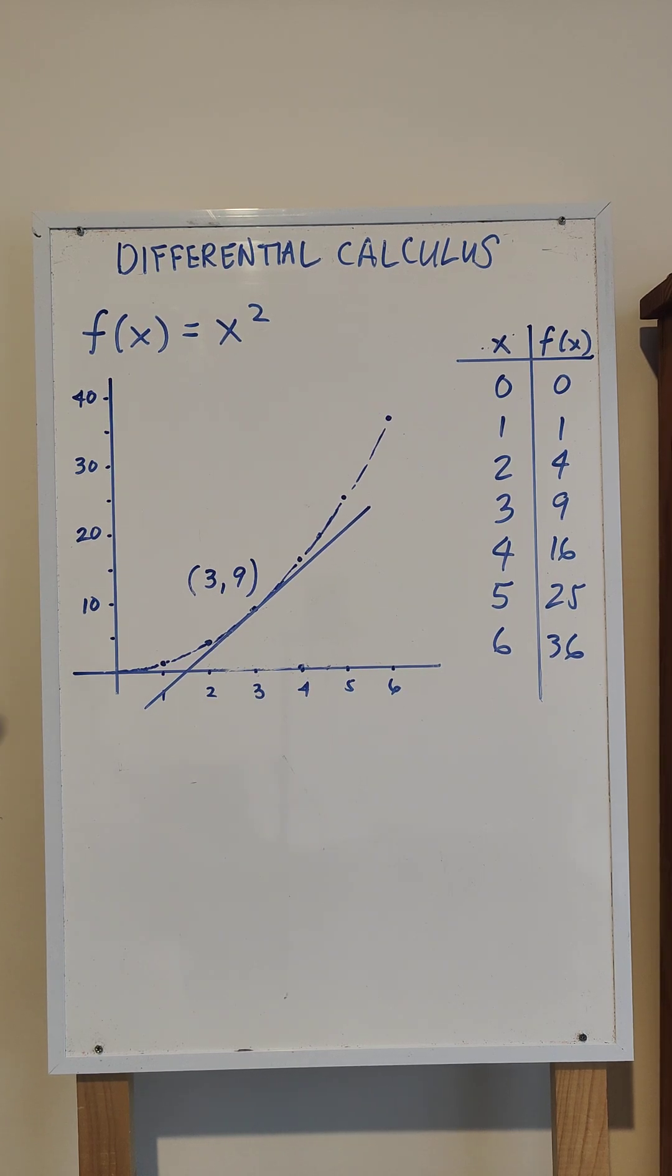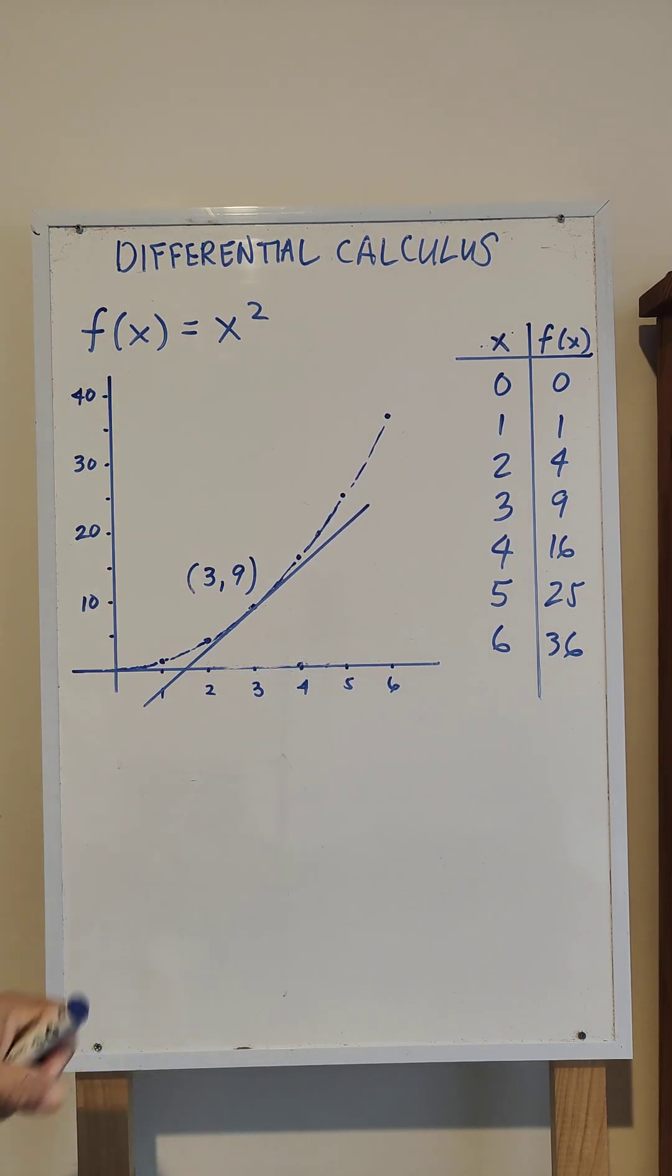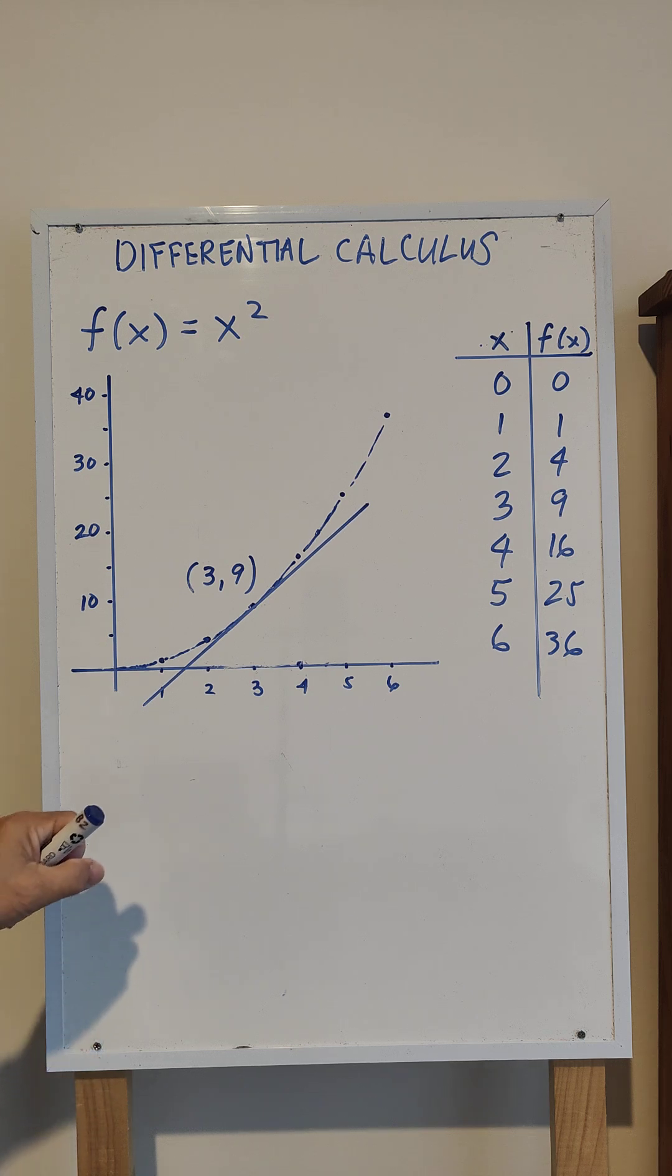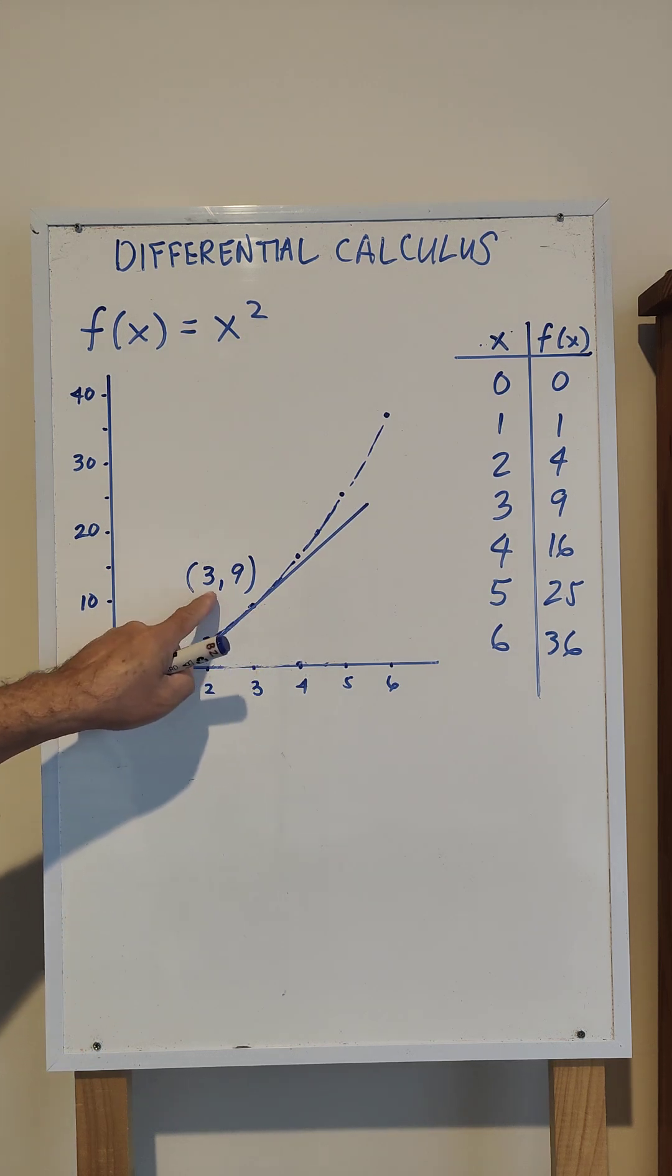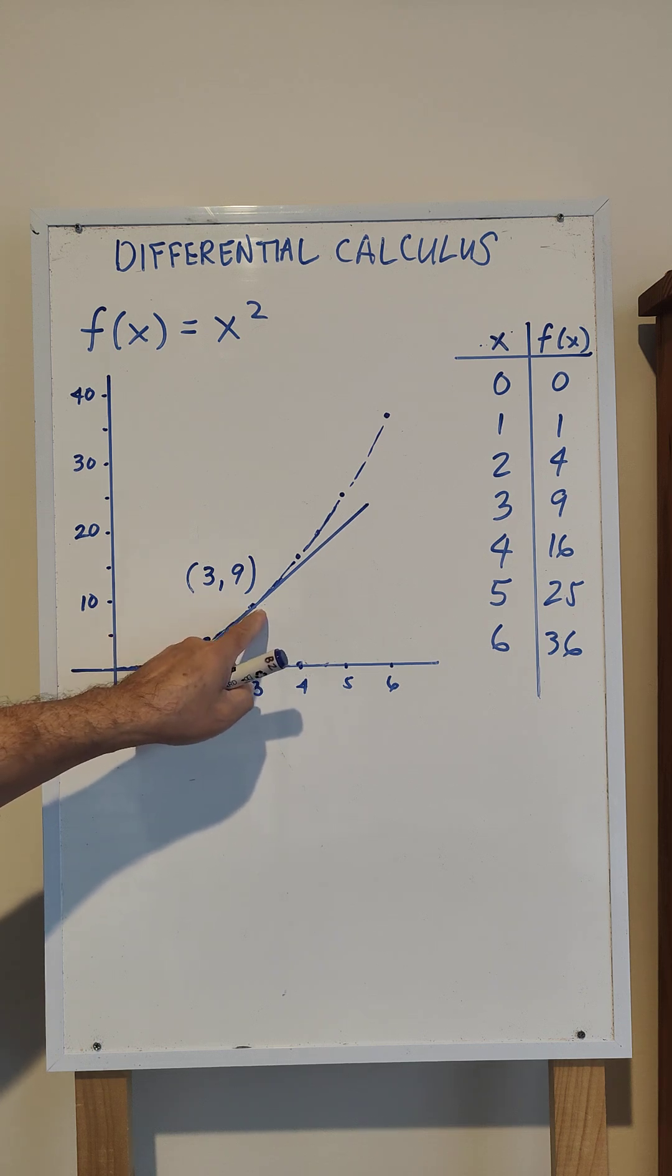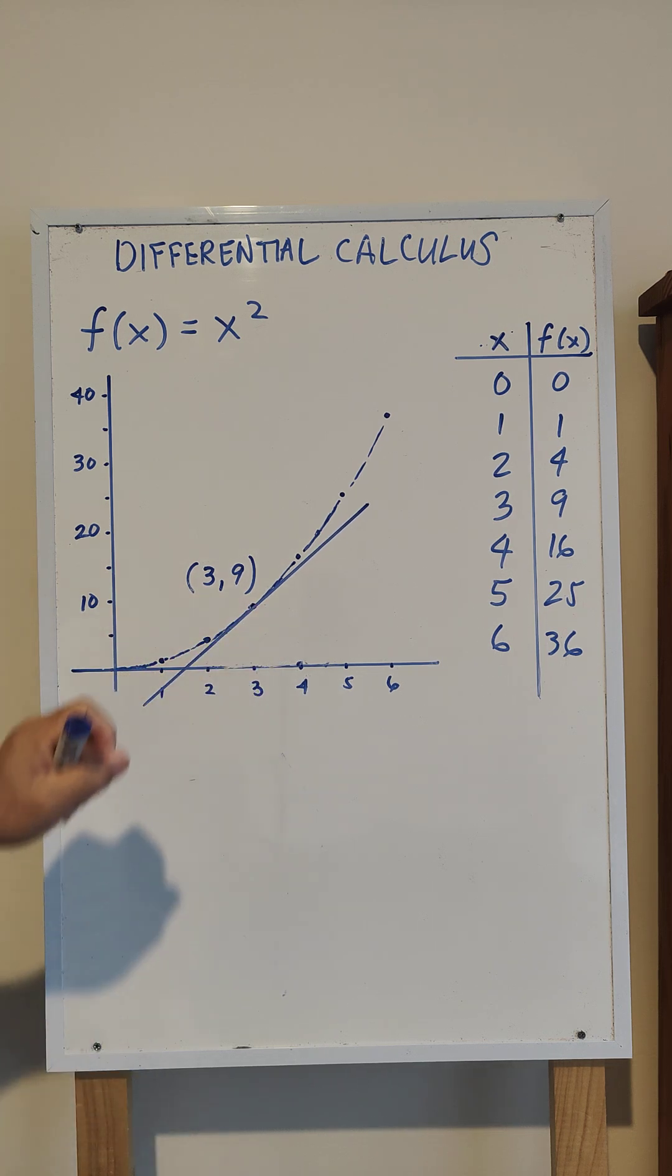We have the equation f(x) = x² and we want to find the slope of the line tangent to the curve at the point (3, 9).